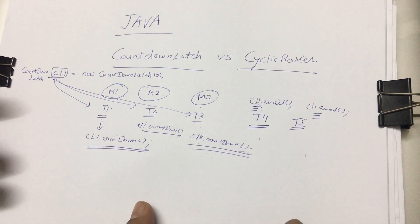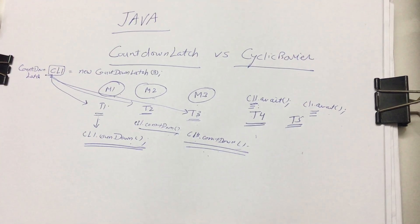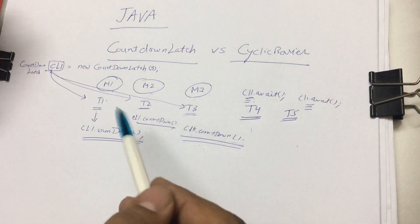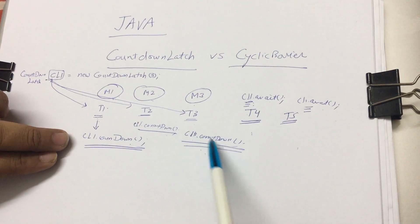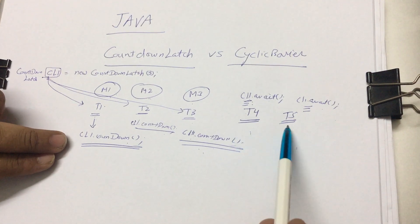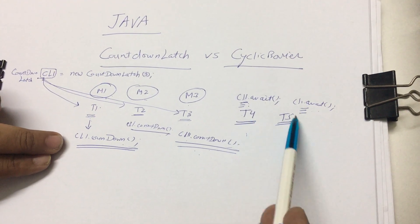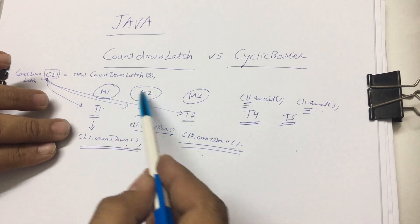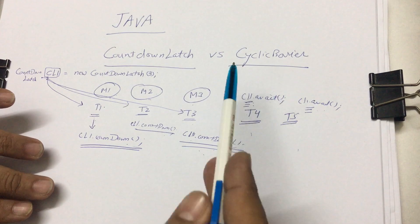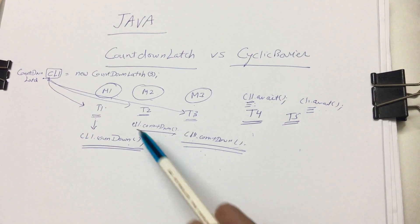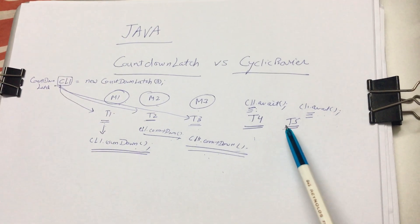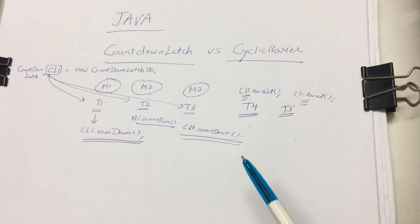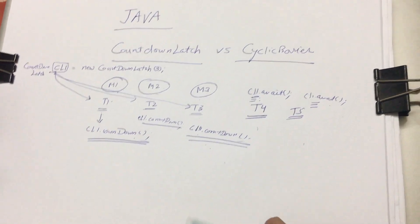This is the use case for CountDownLatch. In this scenario, t1, t2, and t3 decrement the count, while t4 and t5 wait for those results. There are two kinds of threads: ones decrementing the count and ones waiting on a particular line. Now let's move to CyclicBarrier.